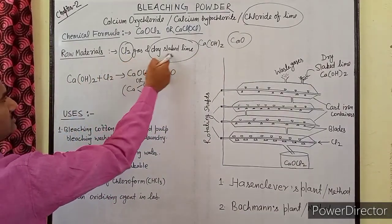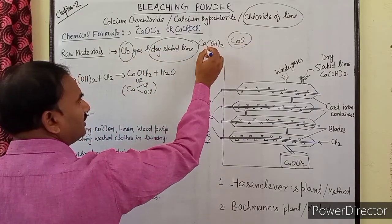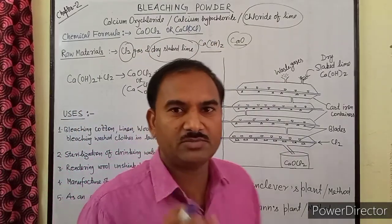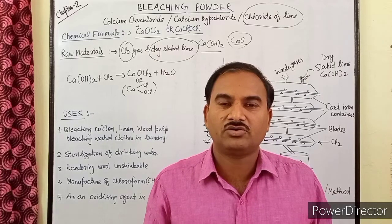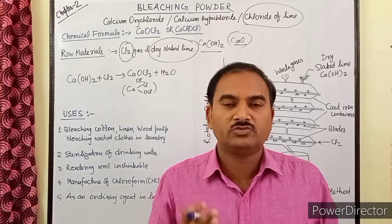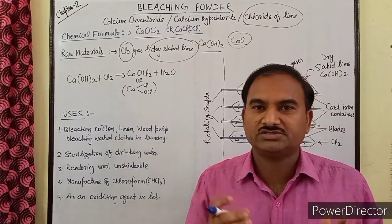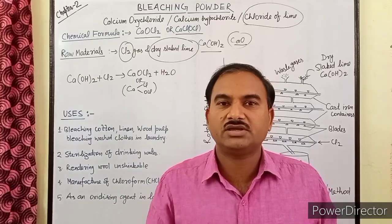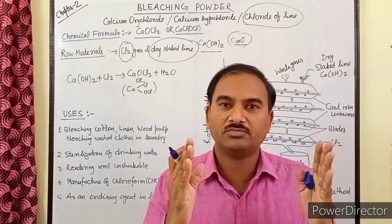We will talk about the source of chlorine gas. Chlorine gas is obtained from the chloralkali process. In the chloralkali process using a Nelson cell for the manufacture of sodium hydroxide, at the anode chlorine gas is generated by electrolysis.